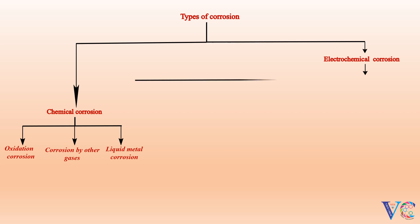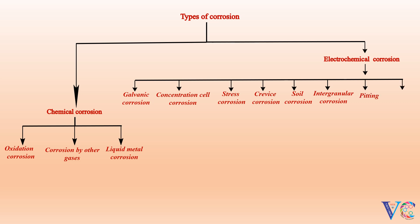Electrochemical Corrosion can be further studied as Galvanic Corrosion, Concentration Cell Corrosion, Stress Corrosion, Crevice Corrosion, Soil Corrosion, Intergranular Corrosion, Pitting, and Microbial Corrosion.